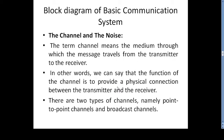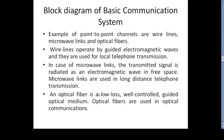The next block is channel and noise. The term 'channel' means the medium through which the message travels from transmitter to receiver. The function of the channel is to provide the physical connection between transmitter and receiver. There are two types of channels: point-to-point channels and broadcast channels. Examples of point-to-point channels are wire lines, microwave links, and optical fibers.